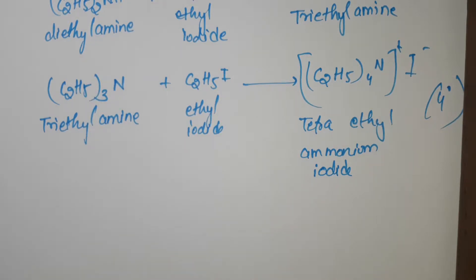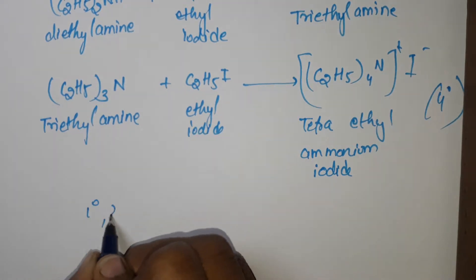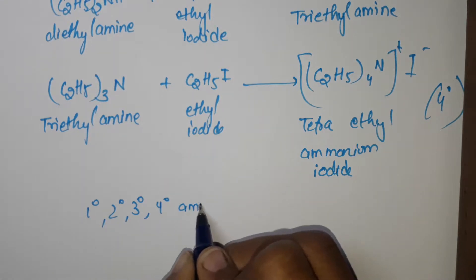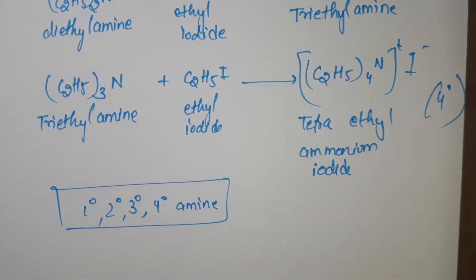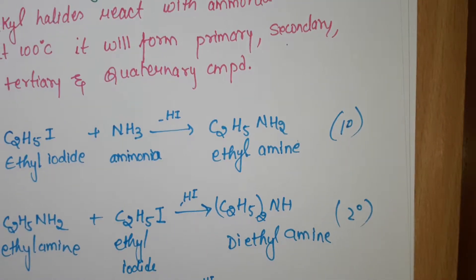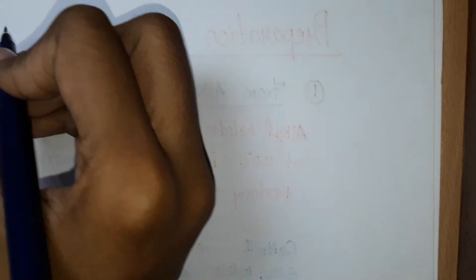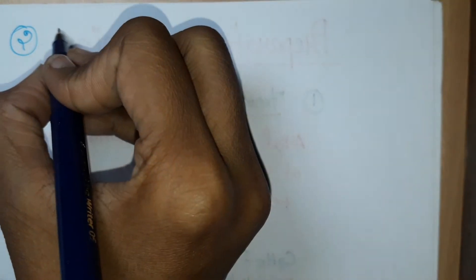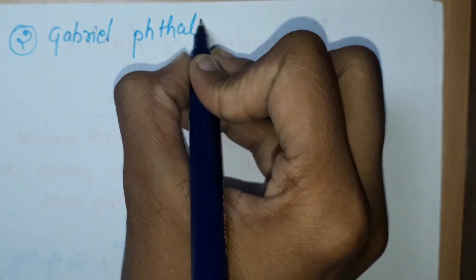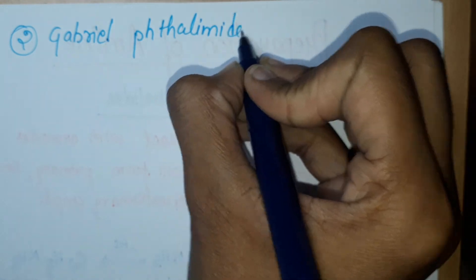This method is very useful for the preparation of primary, secondary, tertiary, and quaternary amines. Now the next preparation is from Gabriel phthalimide synthesis.